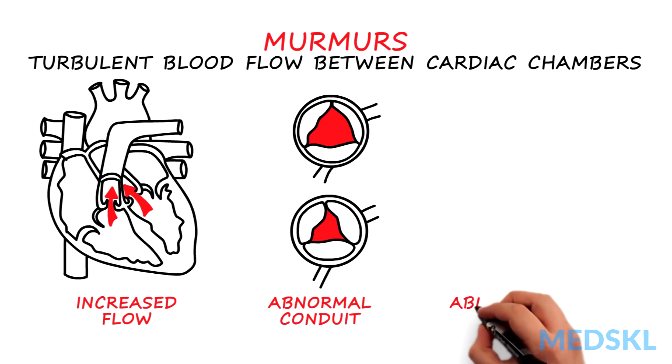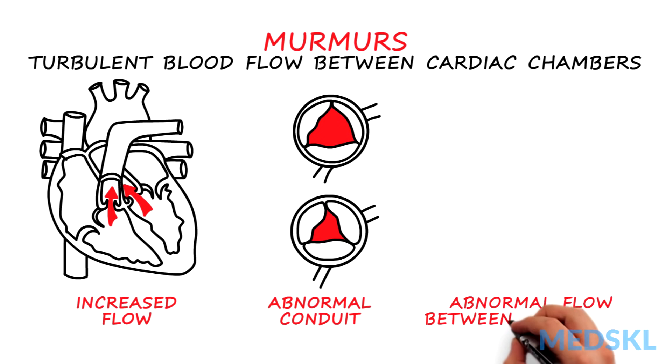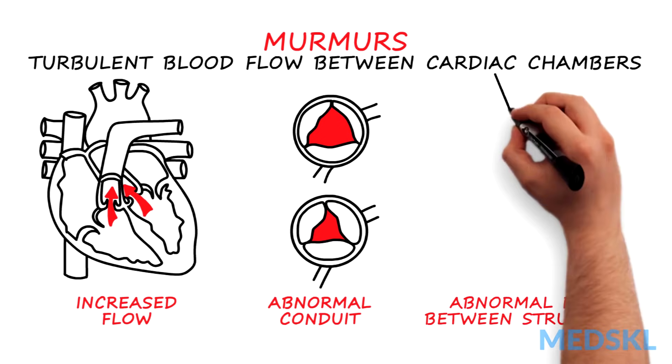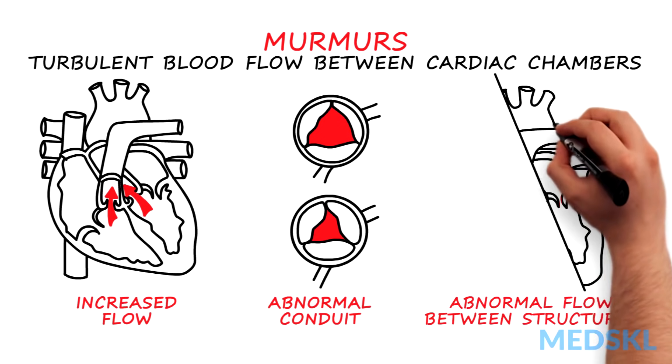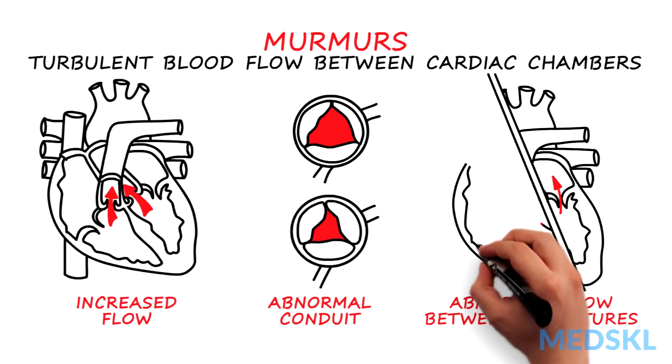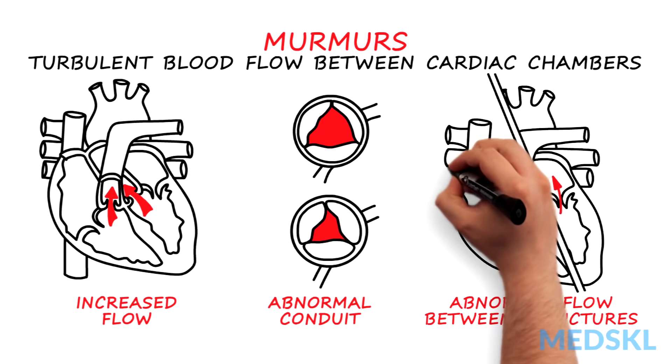Third, murmurs are produced when there is abnormal flow between two structures, as in mitral regurgitation, tricuspid regurgitation, or a ventricular septal defect.